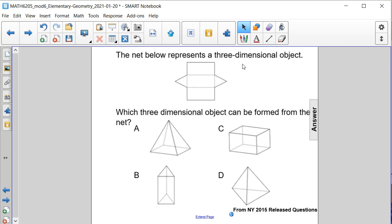The net below represents a three-dimensional object. Which three-dimensional object can be formed from the net?